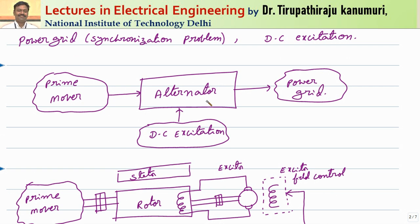Let us take for example an alternator. The alternator will have the prime mover, and the type of prime mover will depend on which type of power generation is there — whether it is a nuclear power plant, hydroelectric power plant, or diesel power plant. Accordingly, the prime mover characteristics will be different. The characteristics of the prime mover are going to affect the alternator, and whatever happens in the alternator is going to affect the prime mover.